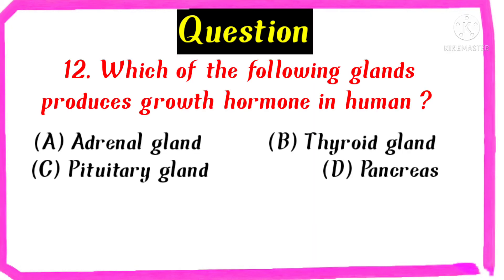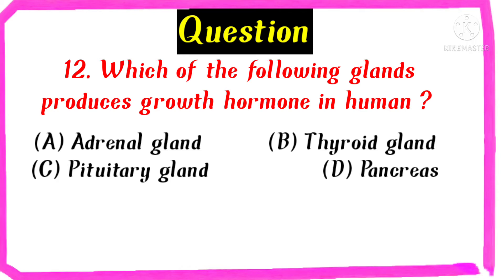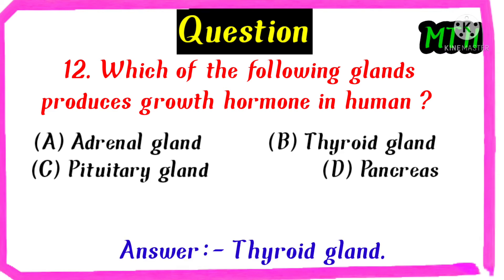Which of the following glands produces growth hormone in humans? Adrenal gland, thyroid gland, pituitary gland, pancreas. The right answer is thyroid gland.